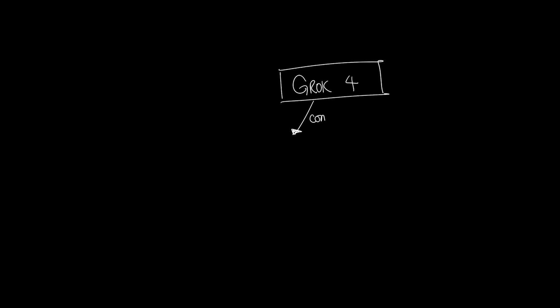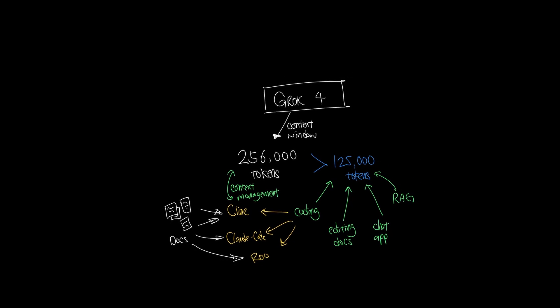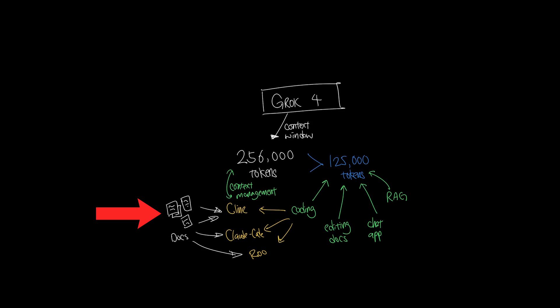Grok 4 has a context window of 256,000 tokens. And if you've been watching my videos, my opinion stands that as of now, anything over 125,000 tokens is honestly more than enough for most tasks. And thanks to agentic softwares like Client, CloudCode, and Roo, and how well it orchestrates the context window so efficiently, we certainly don't need more than 125,000 tokens, which can easily hold up to 20 files of source code. And for atomic tasks, that should be plenty for Grok 4.